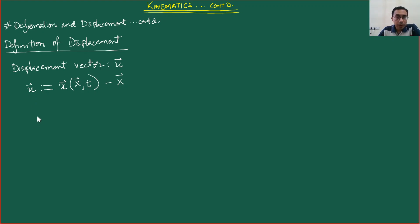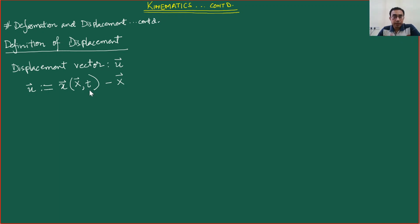From now on, the explicit dependence on time t will be dropped, and we will understand that even though it is not written, it will be implicitly understood.